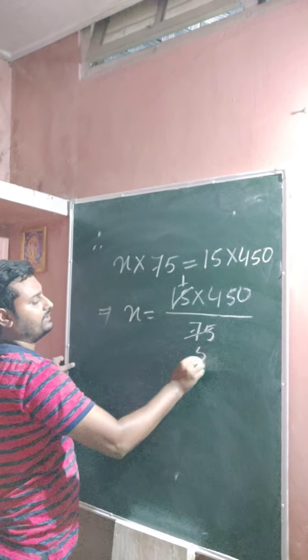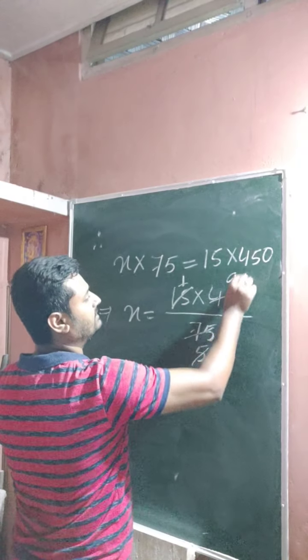So whenever you divide, 15 by 5 is done, 75 again when you divide by 5, it becomes 90.